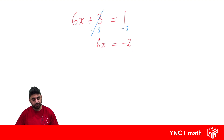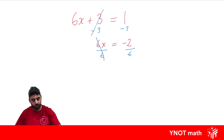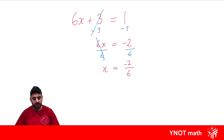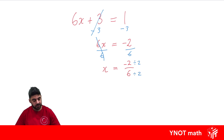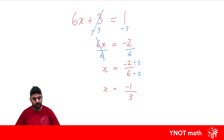And 1 minus 3 gives us minus 2. Now we've got a one-step equation to solve. We need to get rid of that 6 — since 6x means 6 times x, the opposite is dividing by 6. We do that to both sides: 6 divided by 6 is 1, so we're left with x equals minus 2 over 6. This is a fractional answer and we always simplify. Dividing both by 2: minus 2 divided by 2 is minus 1, and 6 divided by 2 is 3, giving x equals minus one third.